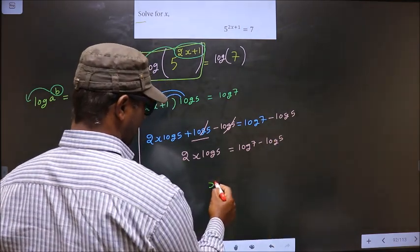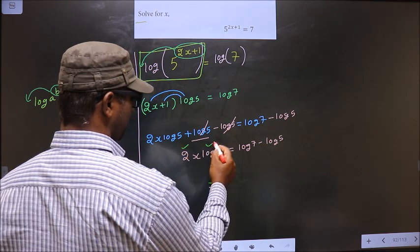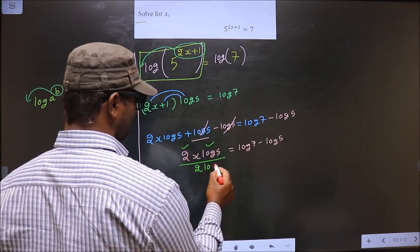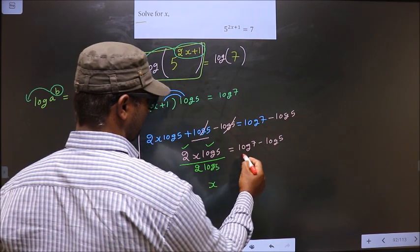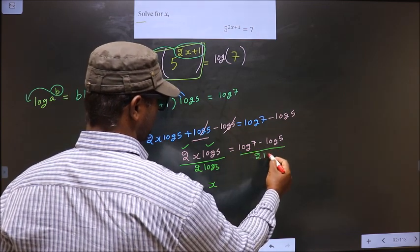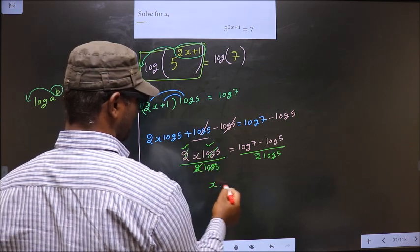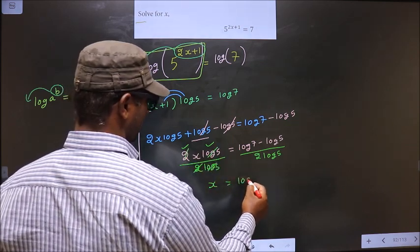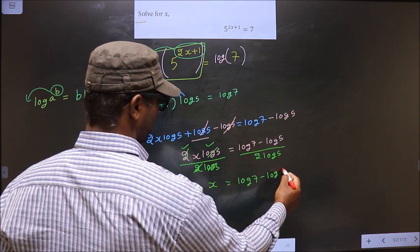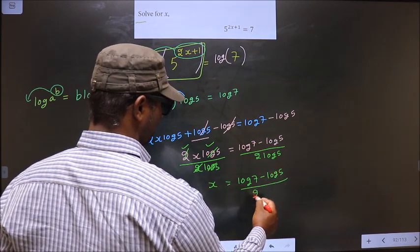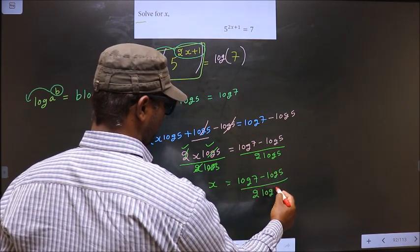Now, to get x, you should remove 2 log 5. To remove that, you divide by 2 log 5 on both sides. So here it cancels out. You get x = (log 7 - log 5)/(2 log 5).